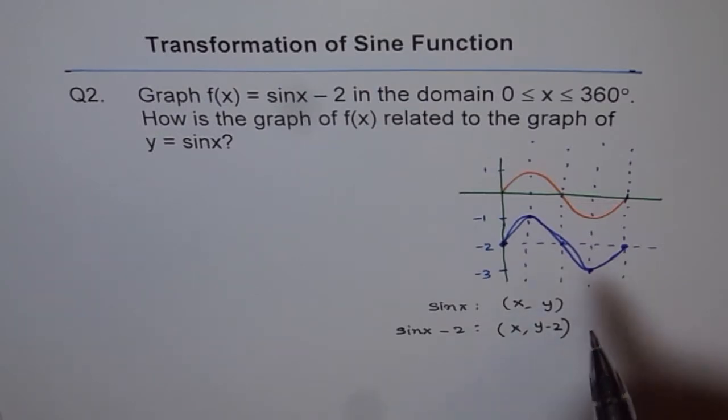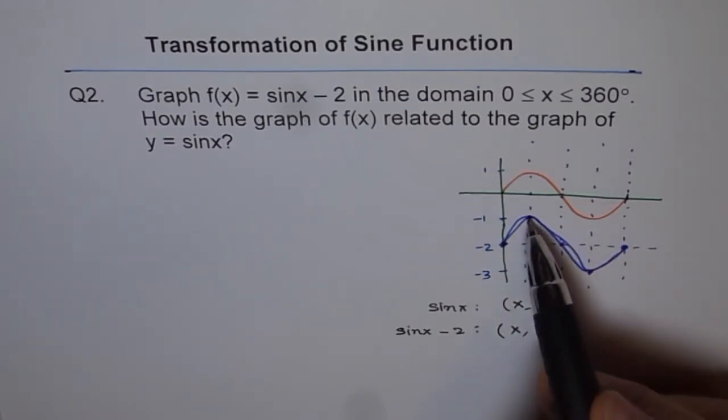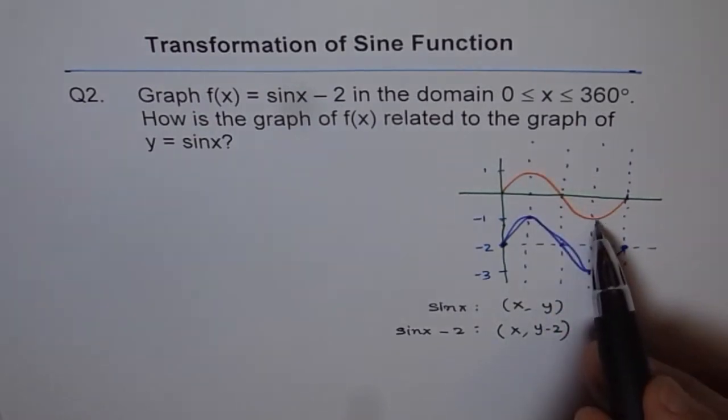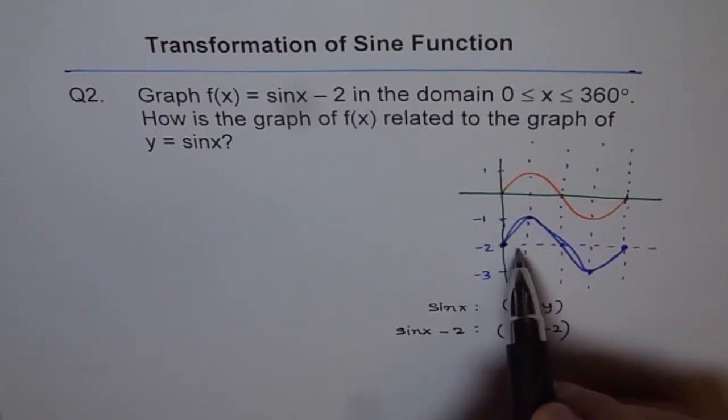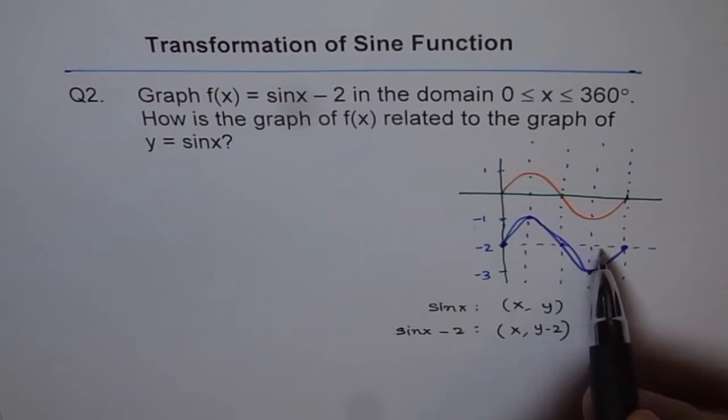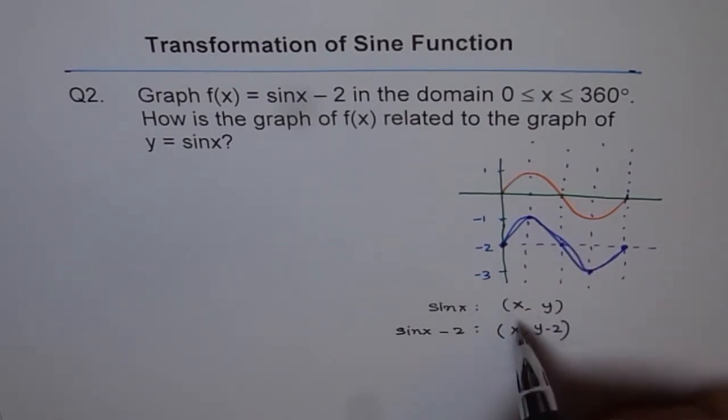Now, that affects so many things. For example, maximum now becomes -1 rather than +1. Minimum is -3 instead of -1. But the x value at which we have maximum and minimum, it remains same. So x values remain same.